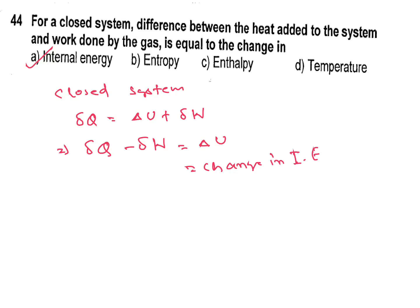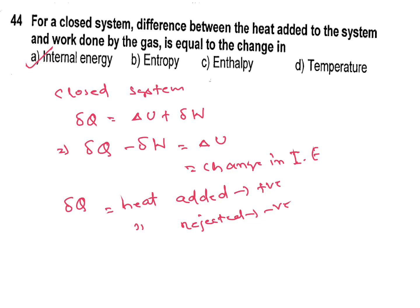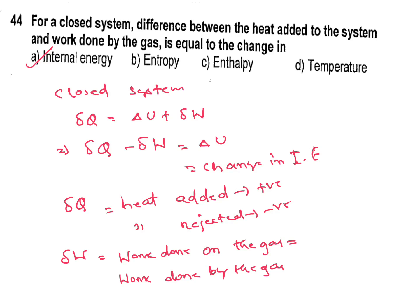Regarding sign convention for internal energy: heat added is positive, heat rejected is negative. And for work done: work done on the gas is negative, and work done by the gas is positive.